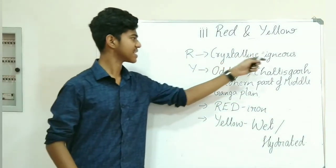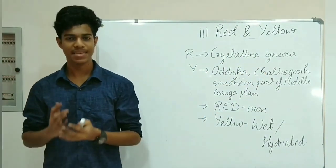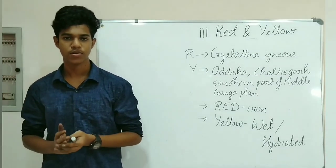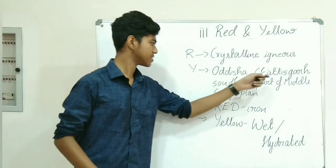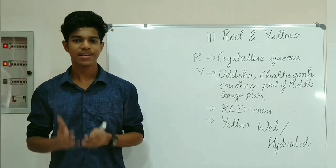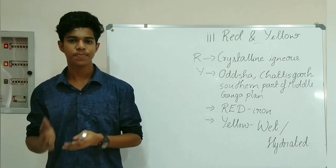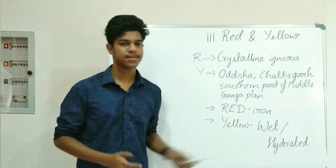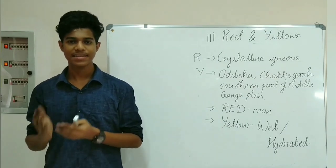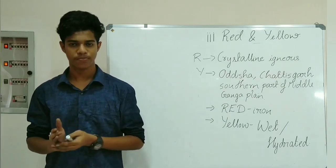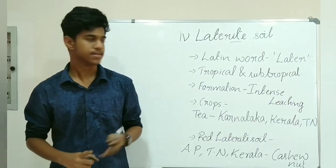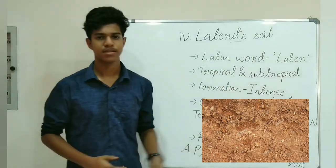The third soil is red and yellow soil. Red soil is found on crystalline igneous rocks in the southern and eastern parts of the Deccan Plateau. Yellow soil is found in parts of Odisha and the southern part of the middle Gangetic Plain. Red soil looks red in color due to the presence of iron content. Yellow soil appears yellow in color in its hydrated form.